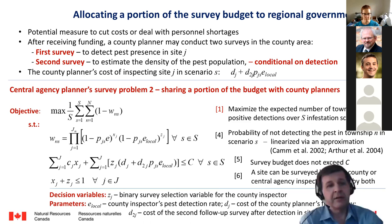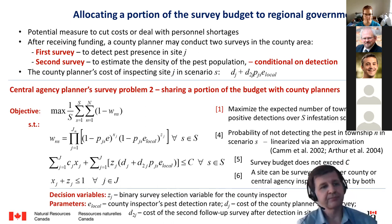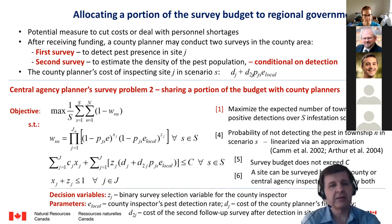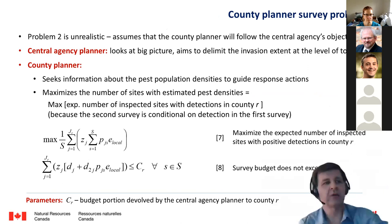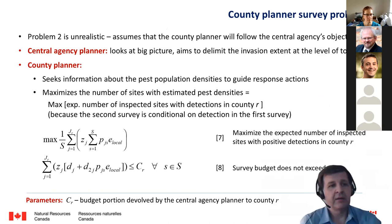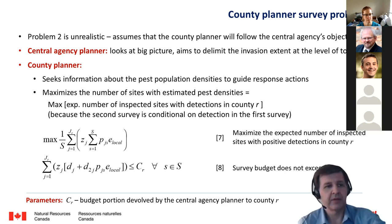The central agency may allocate a portion of survey funds to regional governments as a cost-cutting measure. After receiving the funding, the county planner conducts a survey to detect pest presence in the area. If the pest is found at a particular site, county inspectors want to proceed with a more detailed survey to assess the density of the pest population. The problem is that model 2 is unrealistic because it assumes a cost-sharing strategy would follow the central planning agency's objective — and that's not true because counties follow their own objectives. How can we account for that?